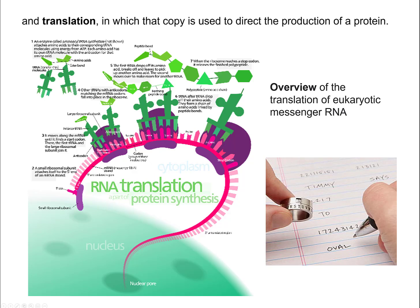The anticodon must match perfectly within three bases — this is called the triplet code. Those three bases translate to a particular amino acid. Transfer RNAs have a sugar system with the amino acid — the building block of a protein — attached. When the codon and anticodon match perfectly and the bases are paired, a particular amino acid is bound to the transfer RNA. This is called charging the transfer RNA.